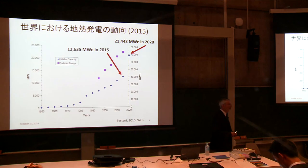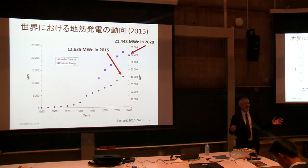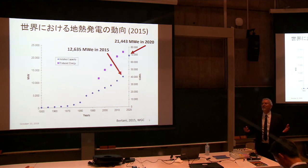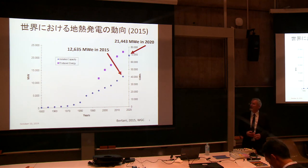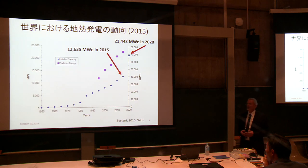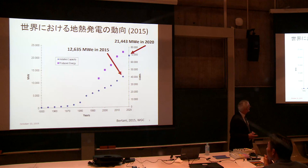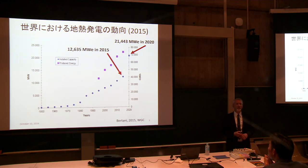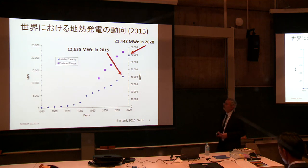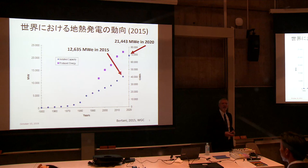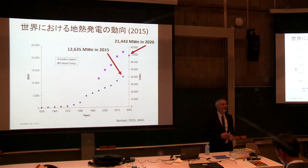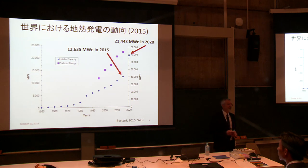Every five years, the World Geothermal Congress — it's like the Olympics — is held, and many people come from 80 or 90 countries to talk about their ambitions and achievements in geothermal energy. Every five years we have an inventory of geothermal resources around the world. You can see all the way back to the 1950s how the capacity of geothermal energy has increased. In 2015, the world in total was producing about 12.5 gigawatts in capacity from geothermal energy.